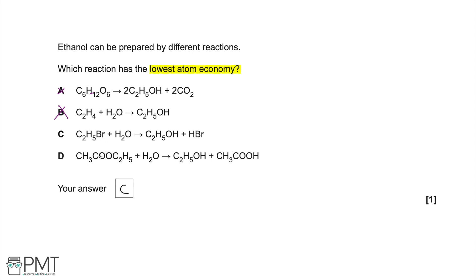We haven't worked through the atom economy of each answer here, but this is a one-mark multiple choice question — we shouldn't be adding up the formula mass of every single compound to double check. If you were unsure between C and D, you could use the formula: the formula mass of the desired product divided by the total formula mass of all reactants, times by 100. But the answer is C because hydrogen bromide is a really heavy side product.